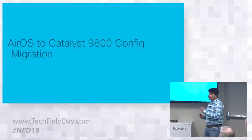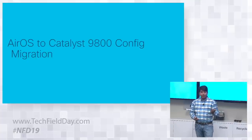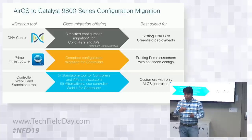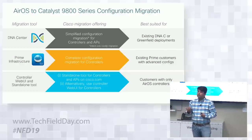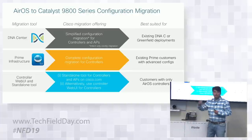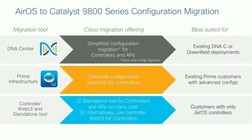The last topic is config migration. AirOS configurations can be migrated even though we're moving to IOS XE with a different CLI format. Through DNA Center, if you've already done design and policy on your AirOS controller, just discover Catalyst 9800 and all configurations get pushed to the 9800 without redesigning the network. Through Prime Infrastructure, you can use existing templates to configure 9800 without changing those templates. The integrated Web UI also provides a tool to import your AirOS configuration and export a version that applies directly to 9800 — a seamless migration.